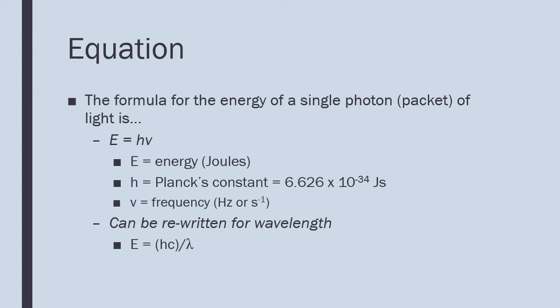In order to calculate the energy for a single photon or packet of light, we will use the formula E equals h nu, where E stands for energy in joules. H is a constant known as Planck's constant, which is equal to 6.626 times 10 to the negative 34th joule seconds. And nu is frequency, just as it was in the c equals lambda nu equation that we saw the other day.